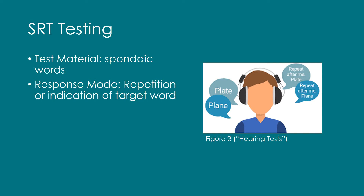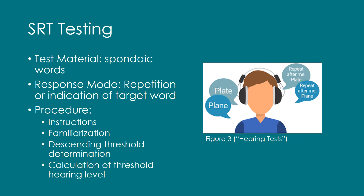A basic procedure consists of instructions, familiarization with spondaic words, a single series of descending threshold determination — which basically means lowering the volume to determine where the client can no longer hear — and calculation of the threshold hearing level.